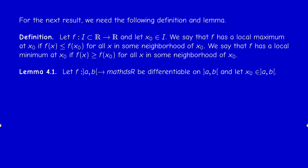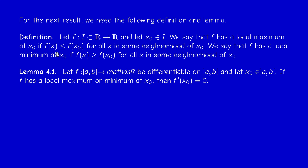The first result is: if you have a function defined on some open interval (A,B) into ℝ, and suppose that it's differentiable, if F has a local maximum or local minimum at the point X₀, then necessarily the derivative vanishes at X₀. Geometrically this means that at X₀ there is a horizontal tangent to the graph. To prove this, just write F(X₀+h) minus F(X₀) over h, which is positive or negative according to the sign of h.